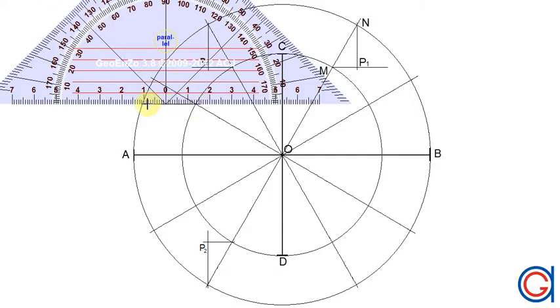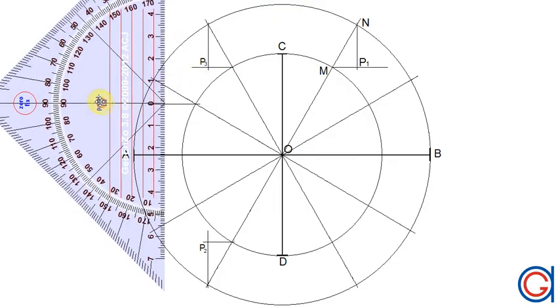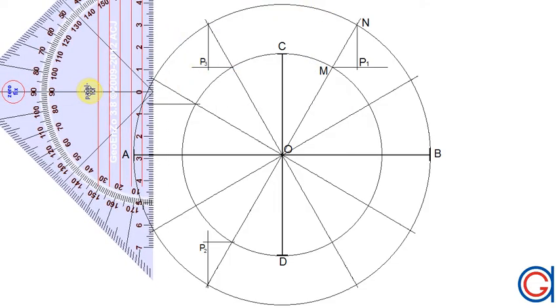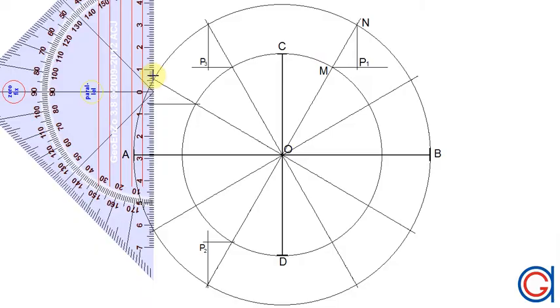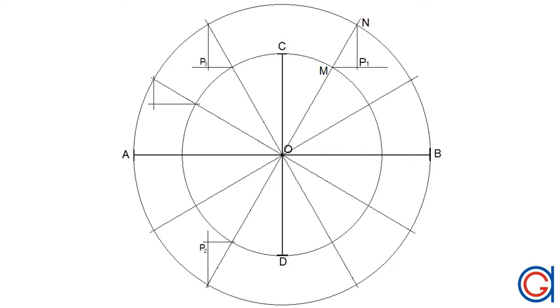Repeat the process again. Where it cuts the small circle, we draw a horizontal line. And where it cuts the large circle, we draw a vertical line. And again, where these two lines intersect will be P4.